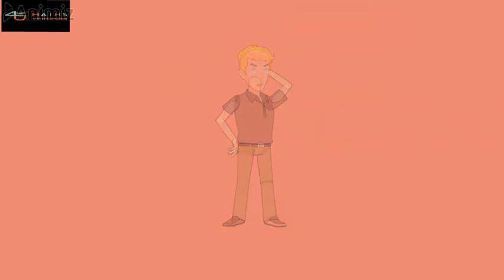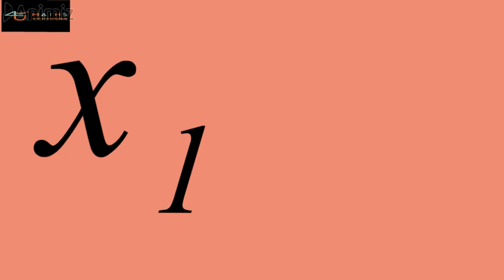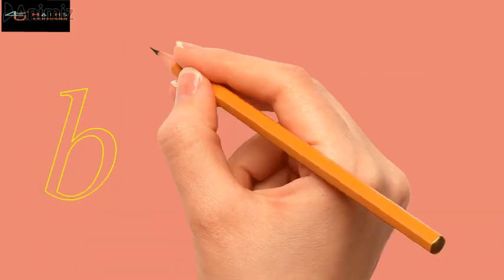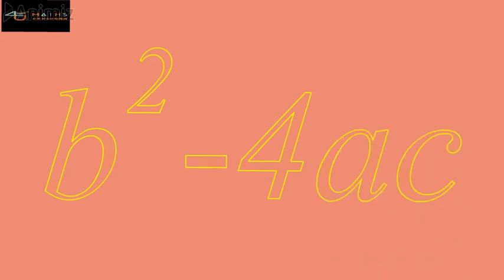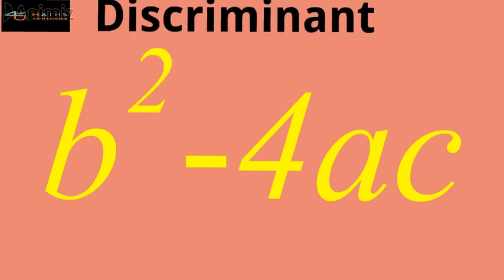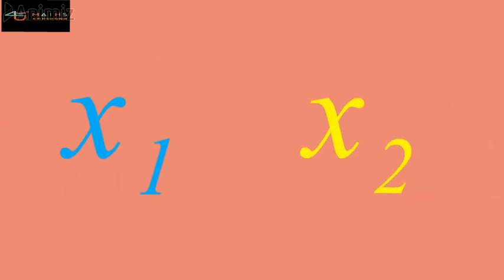How do we distinguish between these two roots of the quadratic equation? This is totally dependent upon the quantity inside the radical sign, that is b squared minus 4ac, which is called the discriminant of the quadratic formula. It is called the discriminant because it differentiates between the two roots of the quadratic equation.